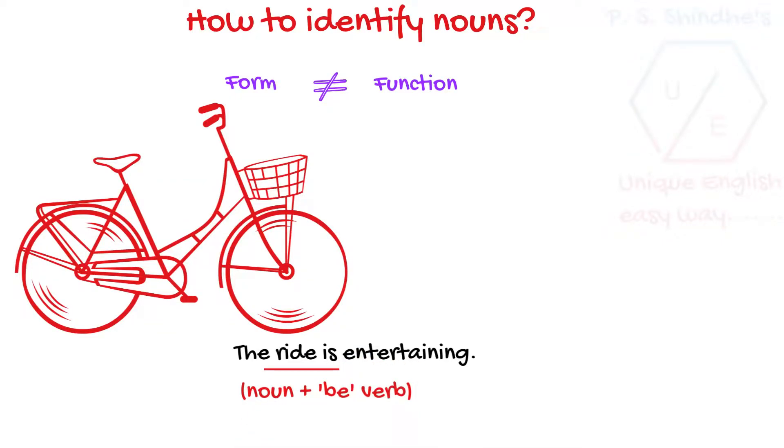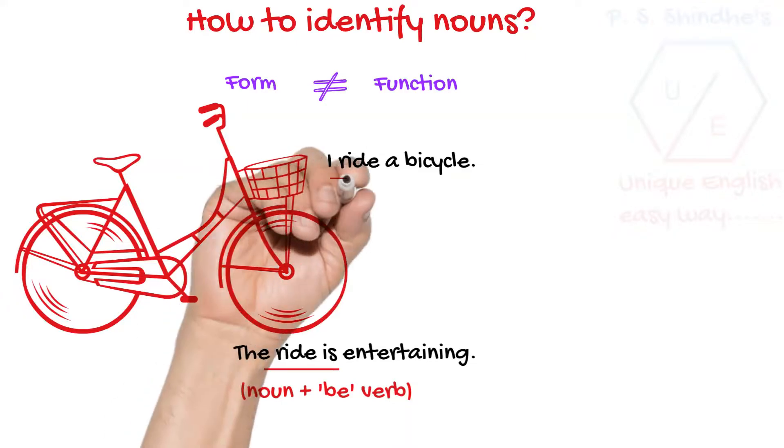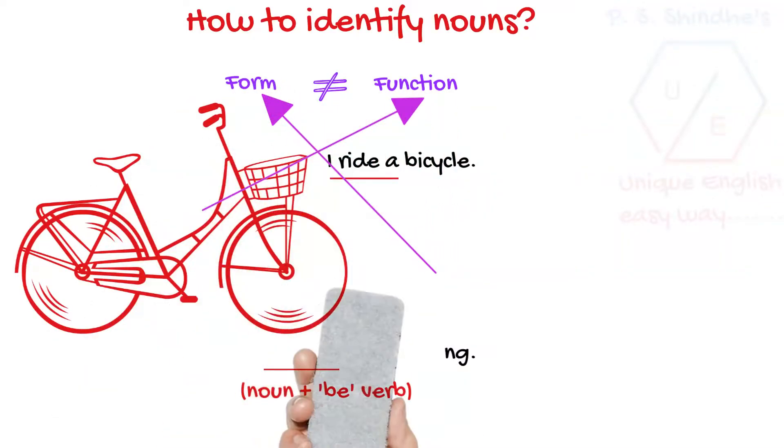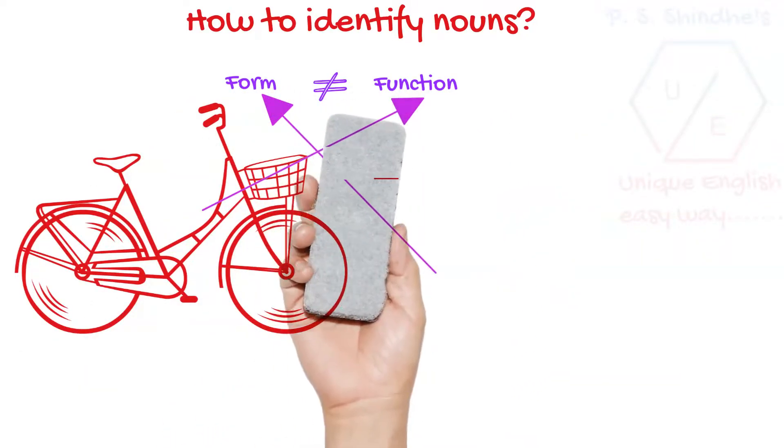Note the same word performing the function of a verb in I ride a bicycle. The form of the word ride is the same in both sentences. Even then, the function differs. Why does this happen so? It's because the form of a noun is not always equal to its function.